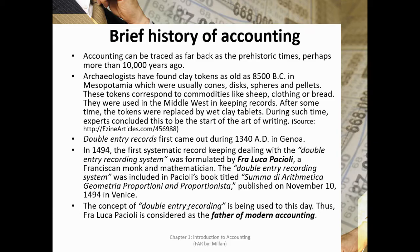These clay tokens were usually coins, disks, spheres, and pellets corresponding to commodities like sheep, clothing, or bread. They were used in the Middle East for record-keeping. After some time, the tokens were replaced by wet clay tablets, and experts concluded this to be the start of the art of writing. Other ancient civilizations keeping account records include Babylonia, Egypt, China, and Greece.